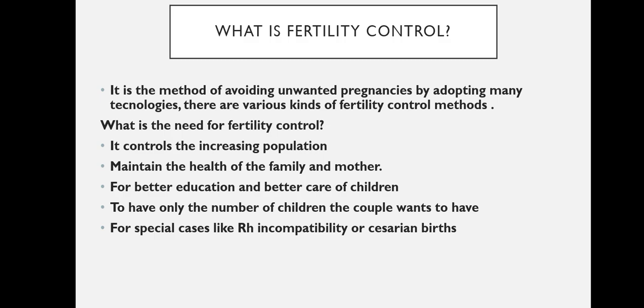As we all know, in humans, coitus and ovulation are not synchronized. So the sexual receptivity of human females is not confined to the period of ovulation. As a result, there is a chance for unwanted pregnancies and births. So in order to avoid this, fertility control is a method of avoiding unwanted pregnancies by adopting many technologies, which are of various kinds.